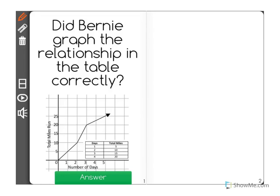Did Bernie graph the relationship in the table correctly? Now I see a table here. It might be a little small, but we can still see it. And I have a graph.